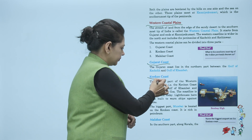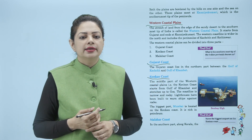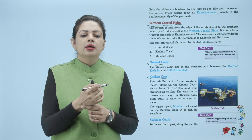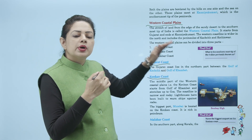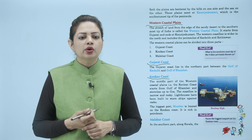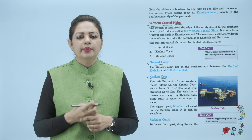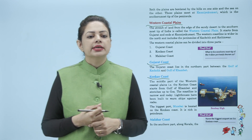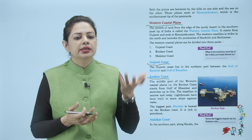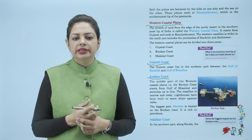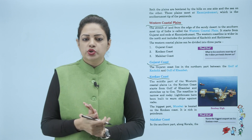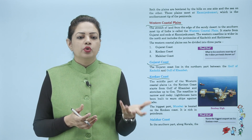Next is Konkan coast. The middle part of the western coastal plain, that is the Konkan coast, starts from the Gulf of Khambat and stretches up to Goa. Jahaan Gujarat coast khatam hote hain Gulf of Khambat mein, wahaan se Konkan coast start hote hain aur Goa mein khatam hote hain. The coastal line is narrow and rocky — pathreeli hai. Lighthouses have been built to warn ships against rocks. The biggest port, Mumbai, is located on the Konkan coast. It is rich in petroleum.